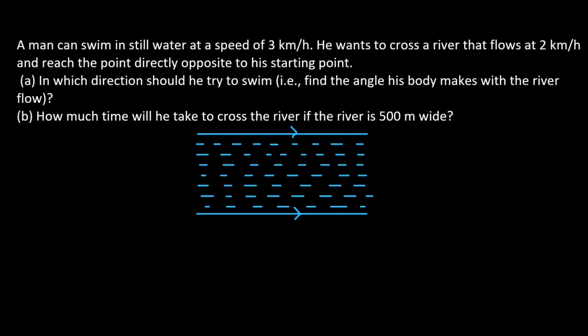What is the question? A man can swim in still water at a speed of 3 km per hour. That is not on a river but on still water. He wants to cross a river that flows at 2 km per hour.